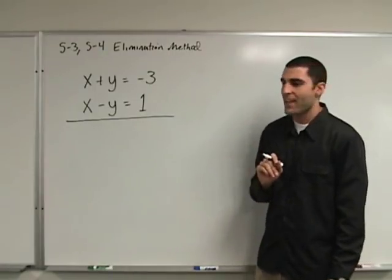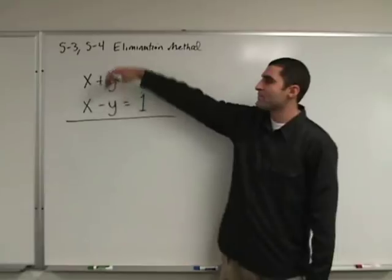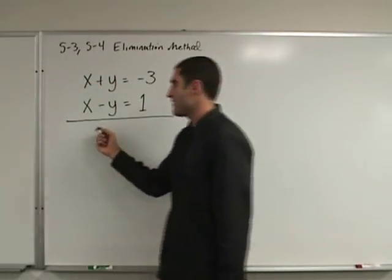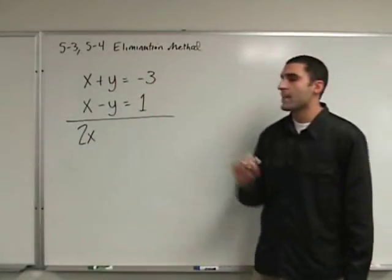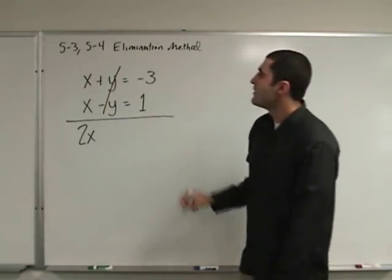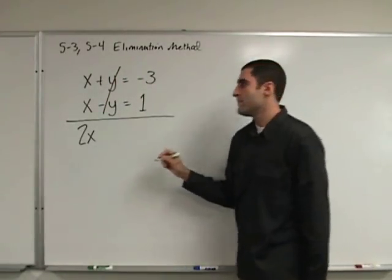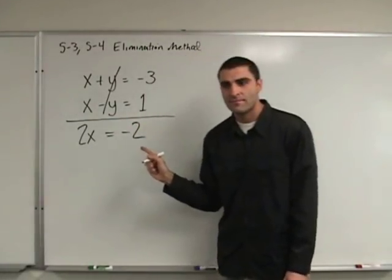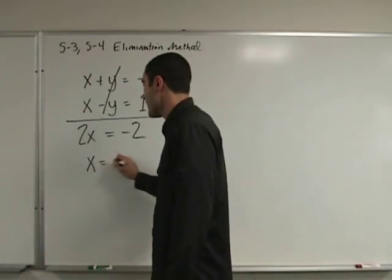Don't worry, it's only been 30 seconds. If we were to add down here, x plus x would be 2x. y plus negative y would cancel. Negative three plus one gives us the answer. Is this solvable? Yes — x is negative one.